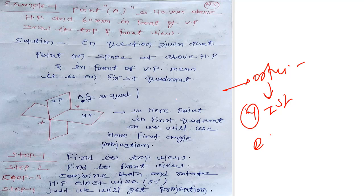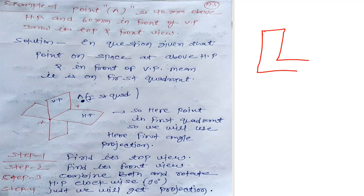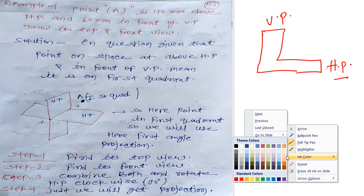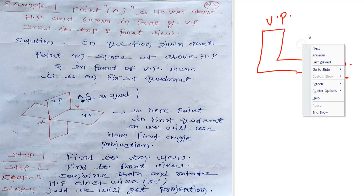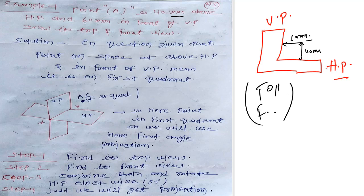For example, here is the question: Point A is 40mm above the horizontal plane and 60mm in front of the vertical plane. Draw its top view and front view. Since only top view and front view are asked, this is first angle projection. Our point is situated in the first quadrant — 40mm above HP and 60mm in front of VP.